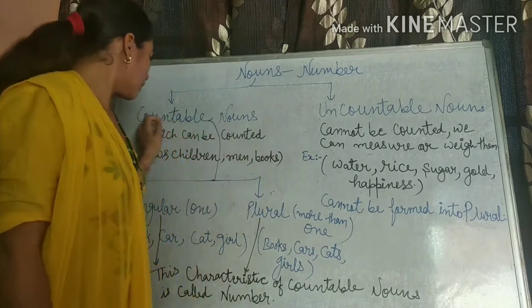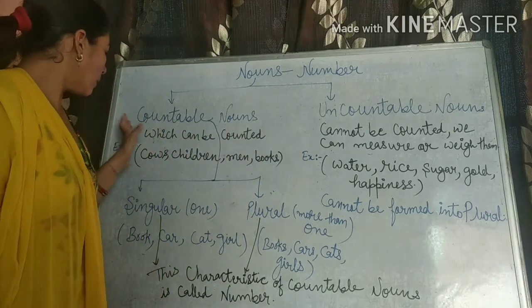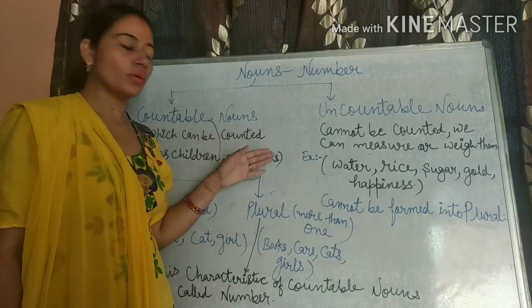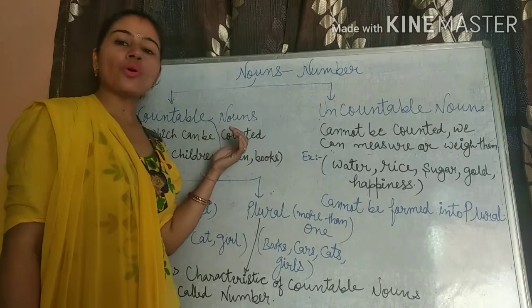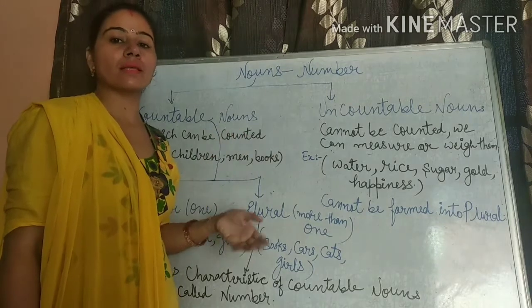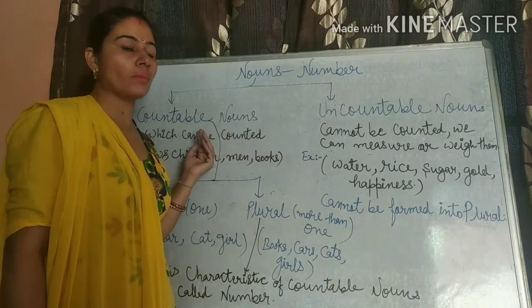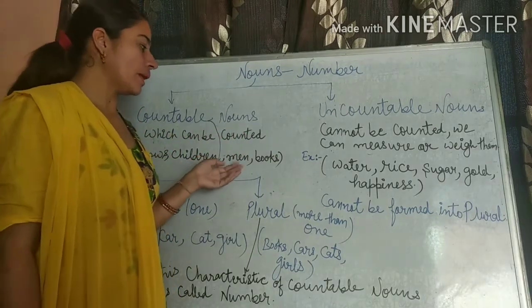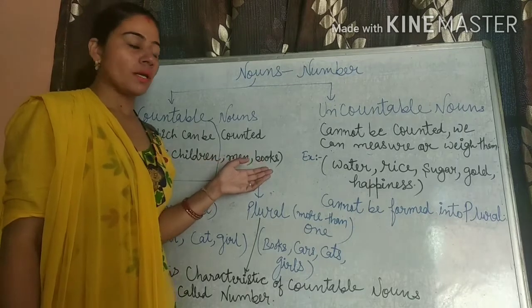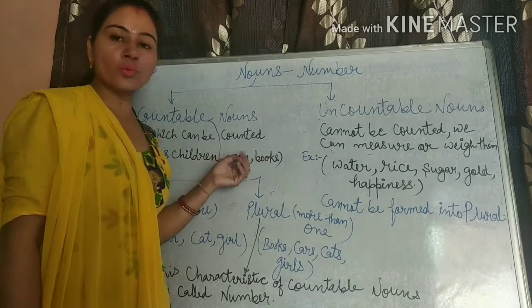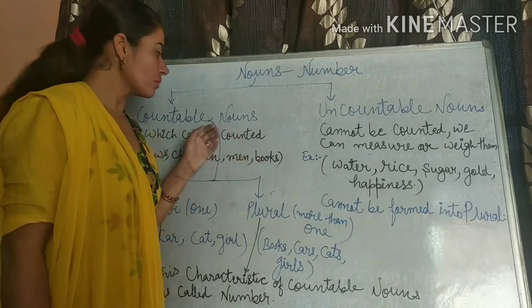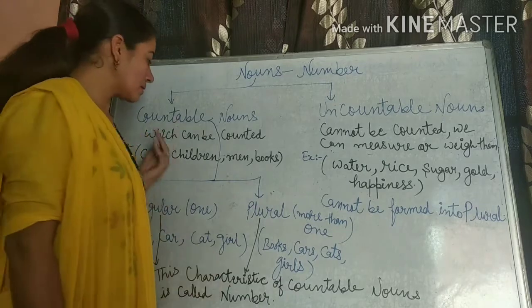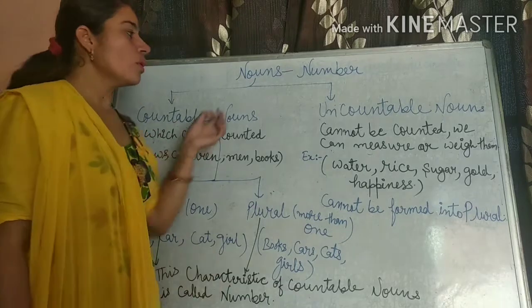Come to the first — countable noun. Countable noun is those which can be counted. Jinko haam gin sakte hai — that is countable noun. For example: cows, children, men, books. Here we can say 'two books.' Jinko haam count kar sakte hai, that is countable noun.